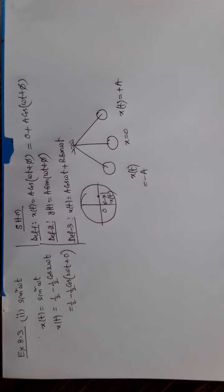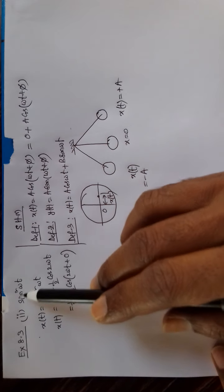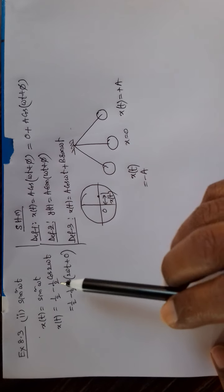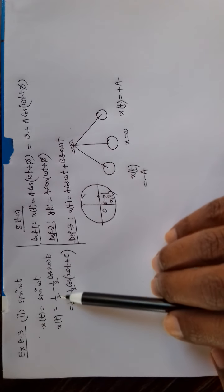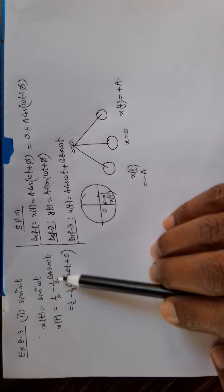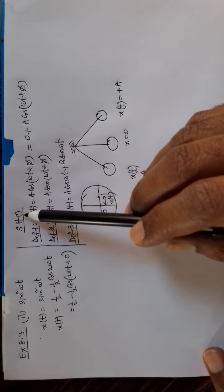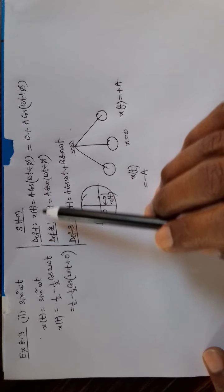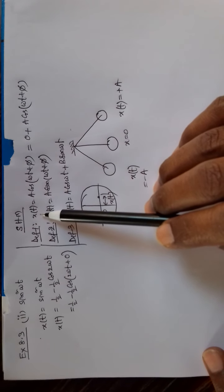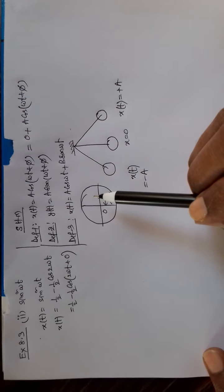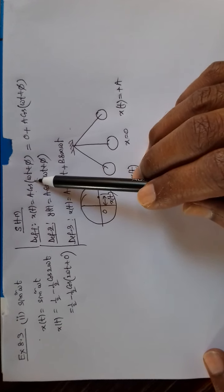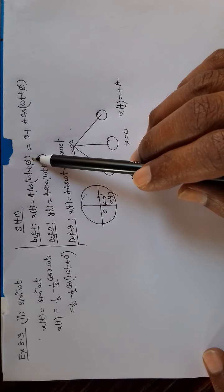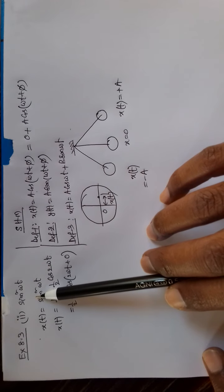Dear students, in the previous video, we did this problem and here the sin square omega t was written as 1 by 2 minus 1 by 2 cos omega t. Similarly, for simple harmonic motion, definition 1: if the displacement of the projection point is denoted by a cos omega t plus phi, then you can say it is executing simple harmonic motion.